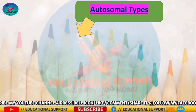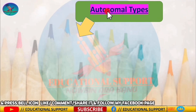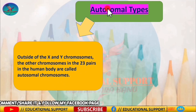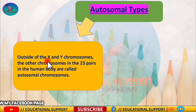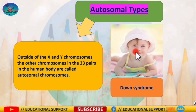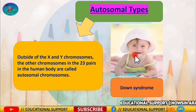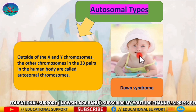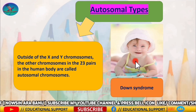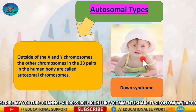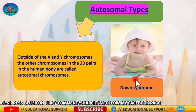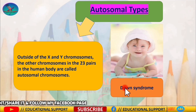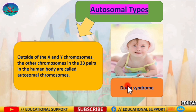Outside of the X and Y chromosomes, the other chromosomes in the 23 pairs in the human body are called autosomal chromosomes, considered chromosome pairs 1 through 22. Reproductive cells such as eggs and sperm must have the right number of chromosomes in order for offspring to develop correctly. For example, individuals with Down syndrome have three copies of chromosome 21 instead of the two copies found in other individuals, something considered an autosomal abnormality.